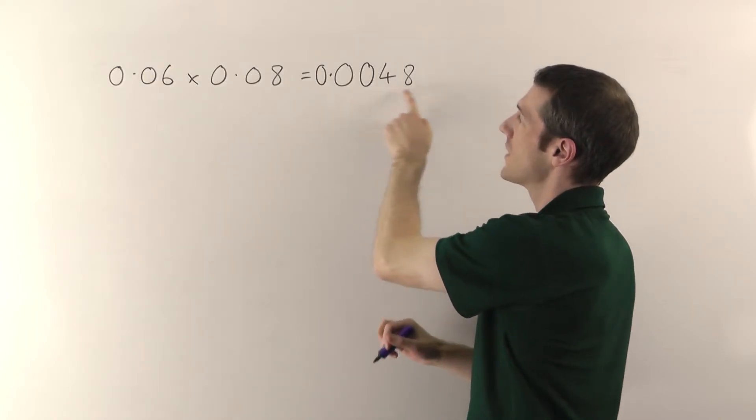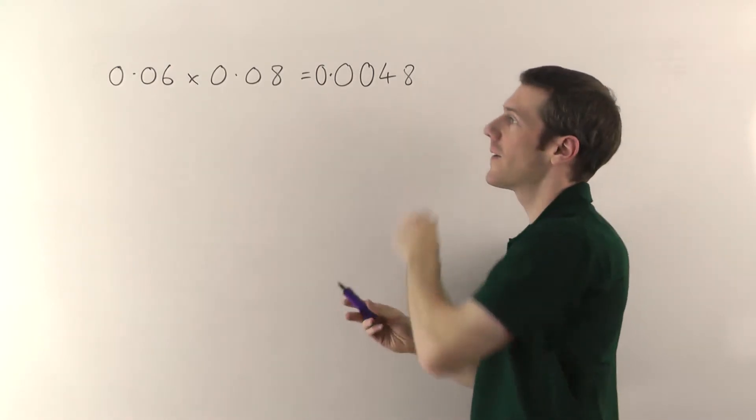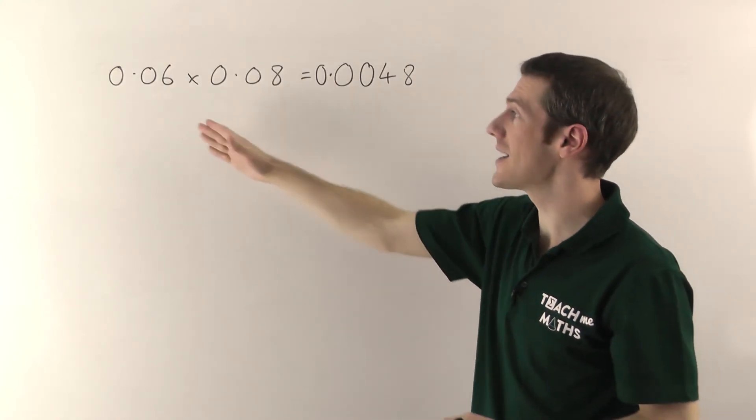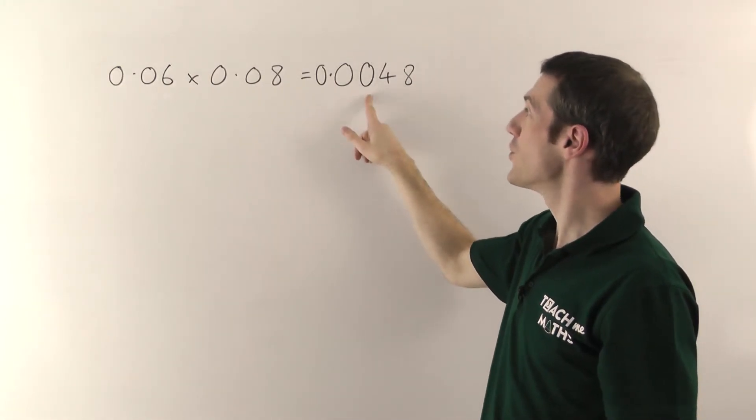So I've got 1, 2, 3, 4 decimal places altogether, because I've got 1, 2, 3, 4 decimal places in the question. So the answer here is 0.0048.